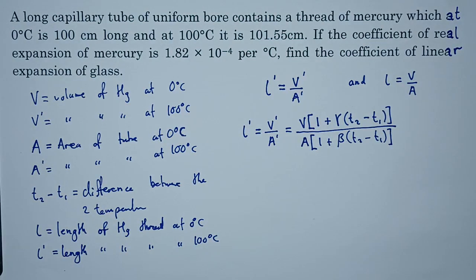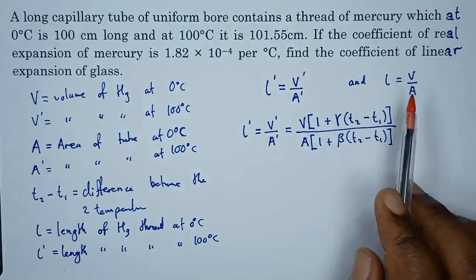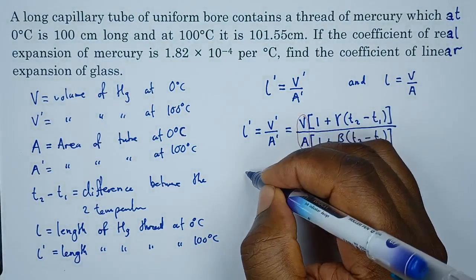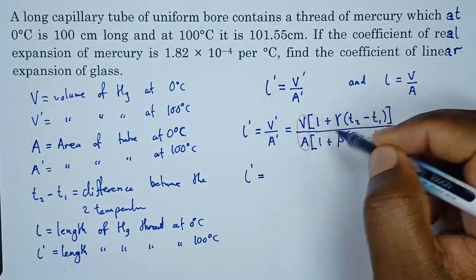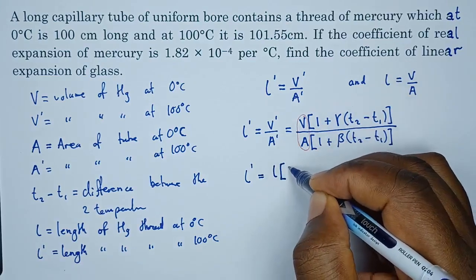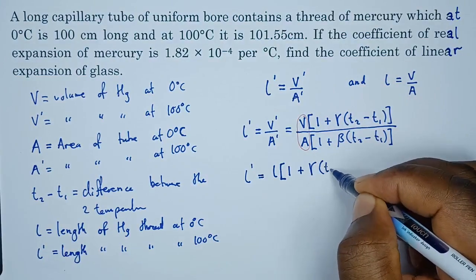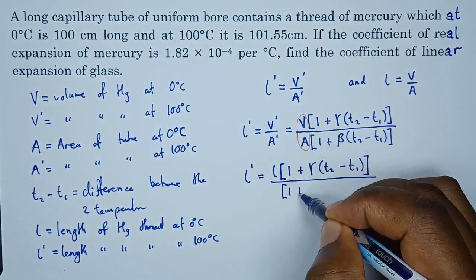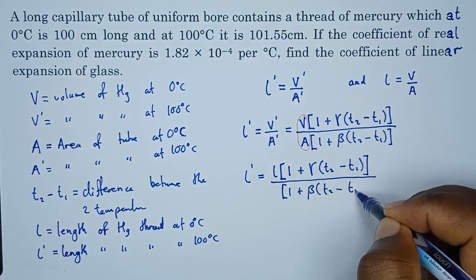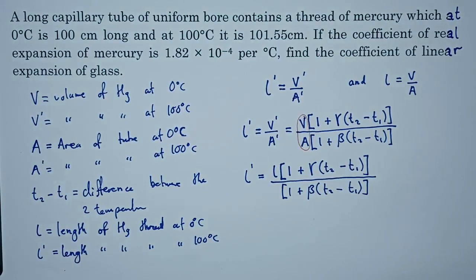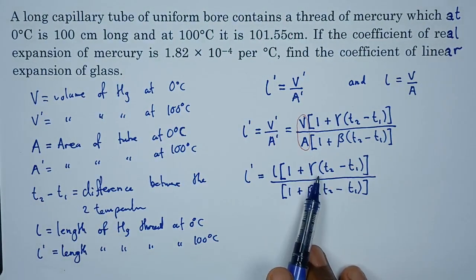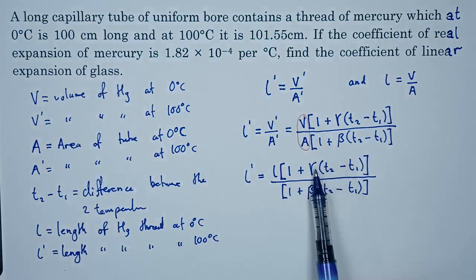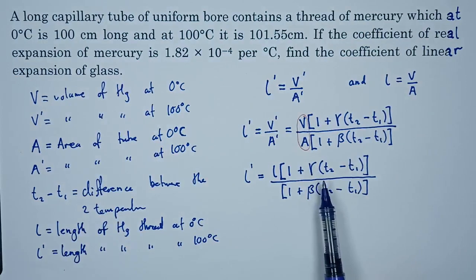Since L equals V over A, we can simplify this expression to L prime equals L times (1 plus gamma times T2 minus T1) divided by (1 plus beta times T2 minus T1). Here gamma represents the coefficient of volume expansion — the real expansion of mercury — and beta is the coefficient of superficial expansion.